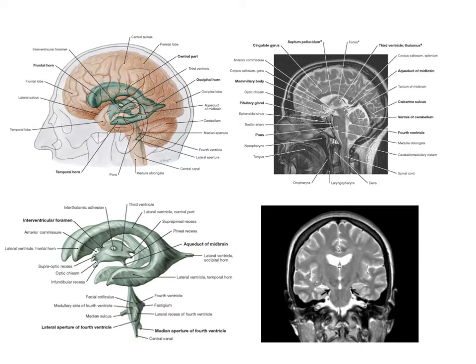So the thalamus on each side squashes the third ventricle flat and we also find the hypothalamic nuclei down here and also structures related to the pineal gland for example. So the third ventricle has very important relations with regard to the thalamus and the hypothalamus in particular.